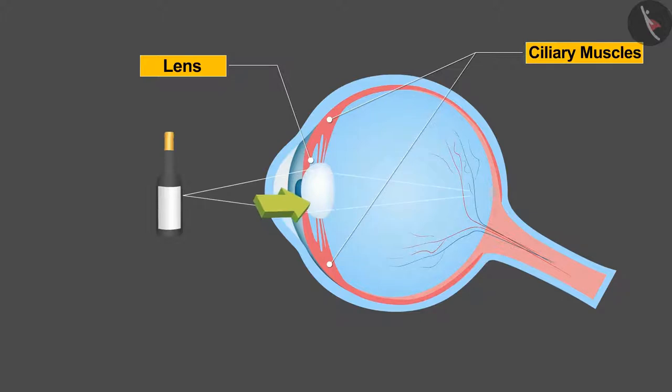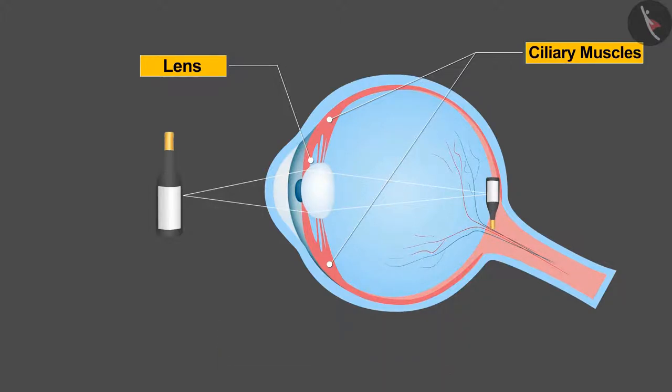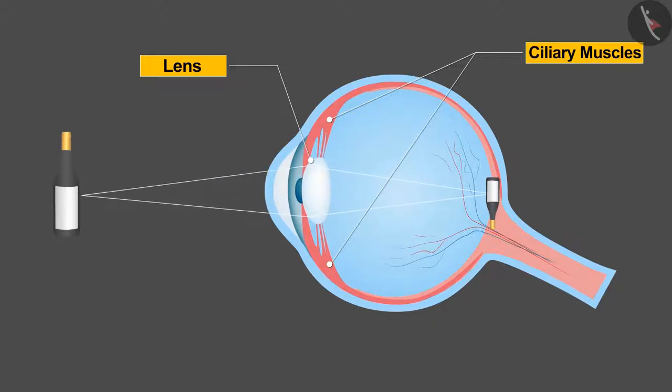In the second case, the ciliary muscles relax, which makes the lens thinner and the focal length increases, which helps us to see distant objects clearly.